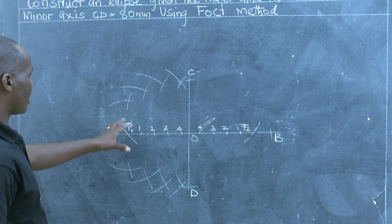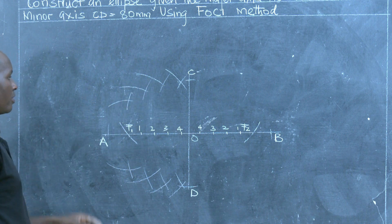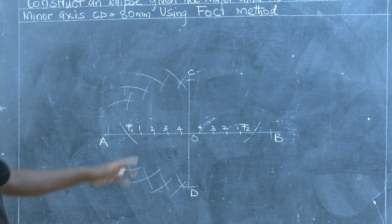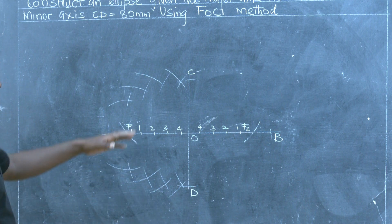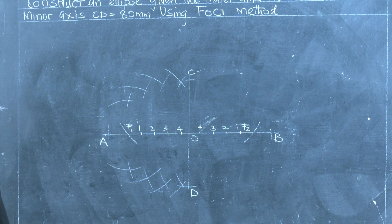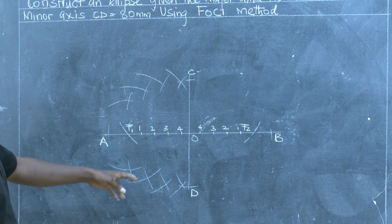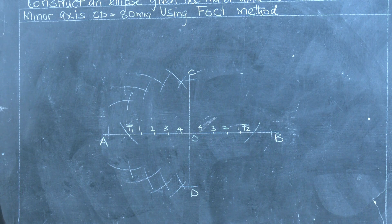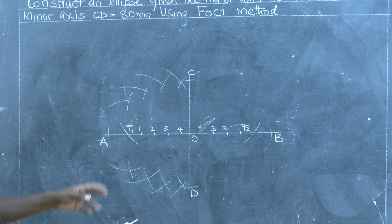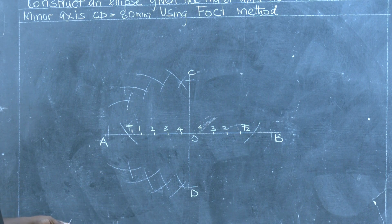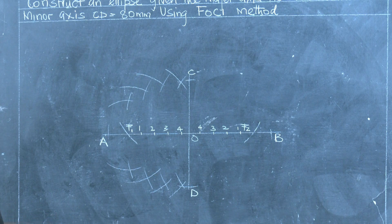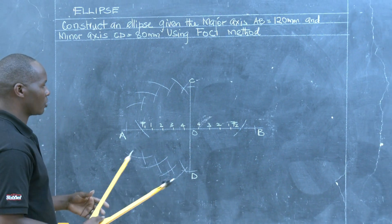We have generated our points on the left-hand side of the minor diameter to define the locus of points for the ellipse. We now do the same on the right-hand side of the minor diameter to get the remaining points, using the same process but mirrored.